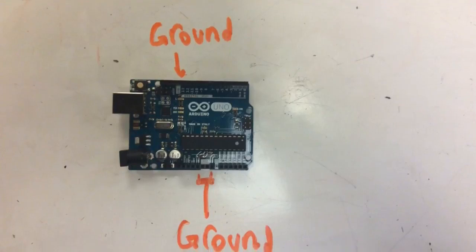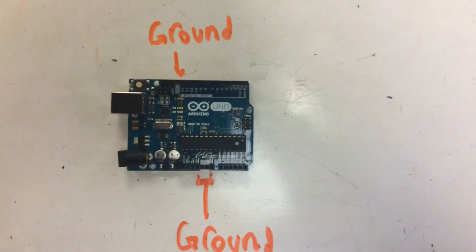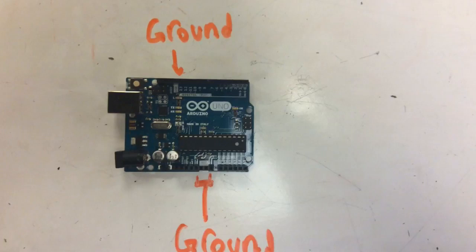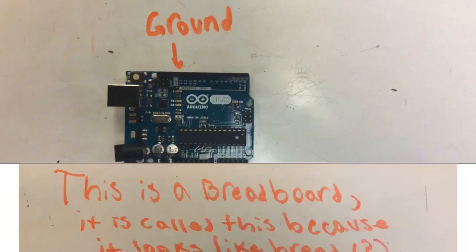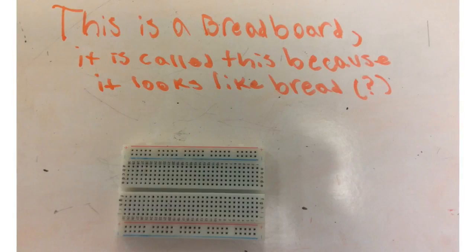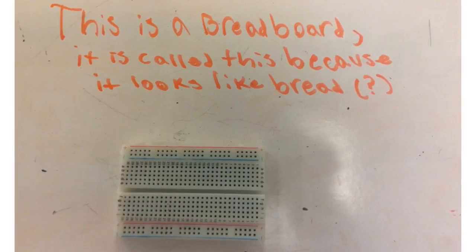These are the ground pins. They have white boxes with the letters GND in them. The circuit must be completed by going through the ground, or else it won't work. A circuit cannot be made on an Arduino, so you must wire the circuit on a breadboard and connect the breadboard to the Arduino with wires.